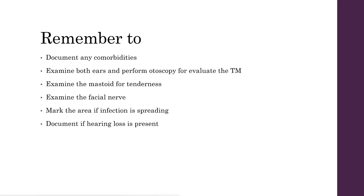As SHOs, when referred to patients with perichondritis or pinna cellulitis, we need to take a good history and perform a thorough physical examination. Please document any comorbidities — patients with immunocompromising conditions can have severe infection, and if they are diabetic they can have harder infections to treat. Also examine both ears even if the infection is only in one.